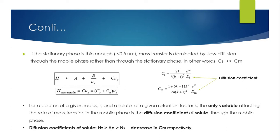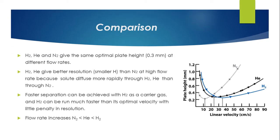Diffusion coefficients of solute in H₂, He, and N₂ decrease in that order respectively. H₂, He, and N₂ give the same optimal plate height of 0.3 mm, but at different flow rates.